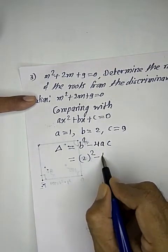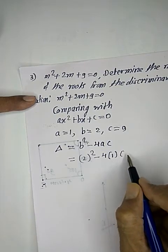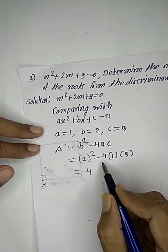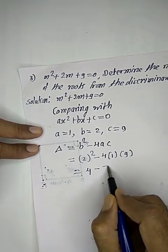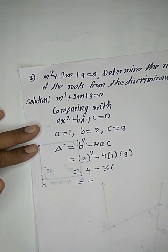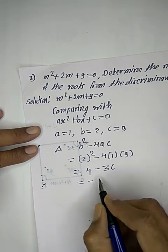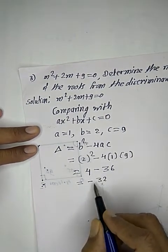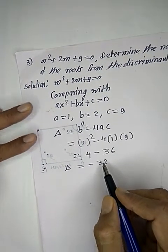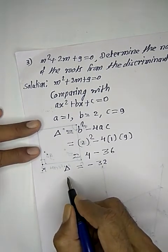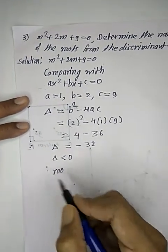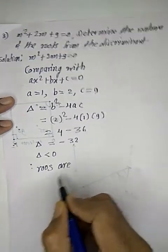Delta is equal to b² - 4ac = (2)² - 4(1)(9) = 4 - 36 = -32. Since delta is less than zero or negative, therefore roots are not real.